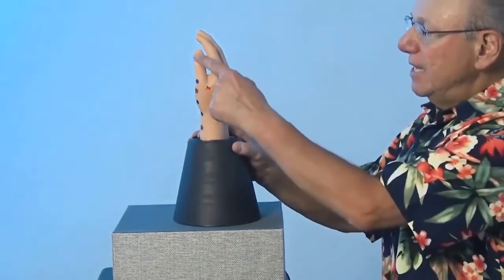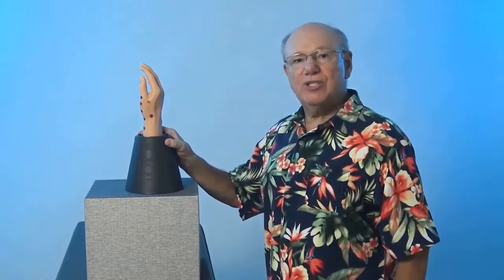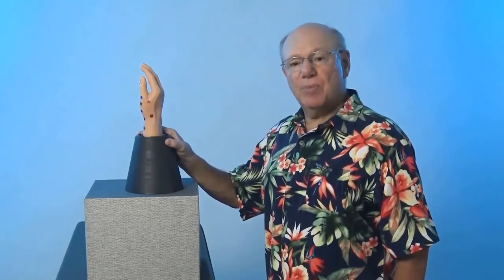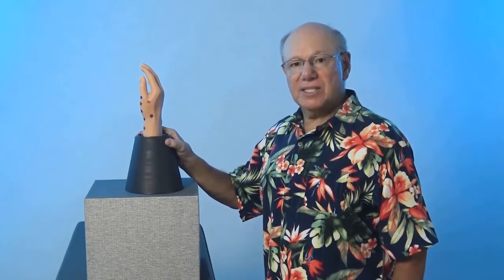Then, follow your thumb down to your wrist like this. You'll be between two tendons. Push in to find a point that is sensitive, sore, tender, or painful. That is Large Intestine 5.